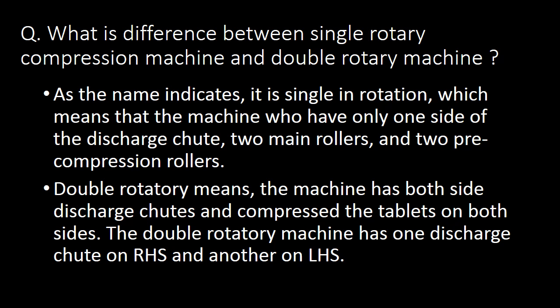Next question: what is the difference between a single rotary compression machine and a double rotary machine? A single rotary compression machine has only one side discharge chute, two main rollers, and two pre-compression rollers. A double rotary compression machine compresses tablets on both sides, with one discharge chute on the right-hand side and another on the left-hand side.